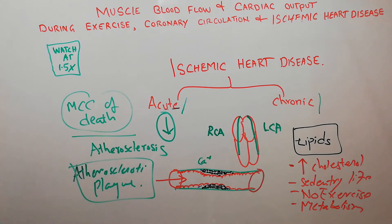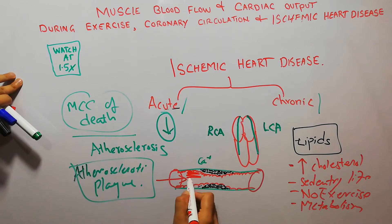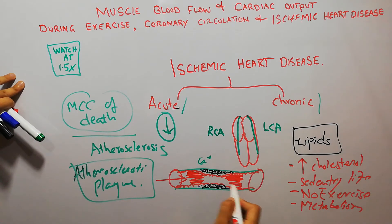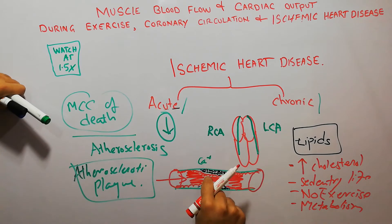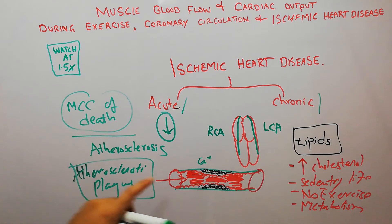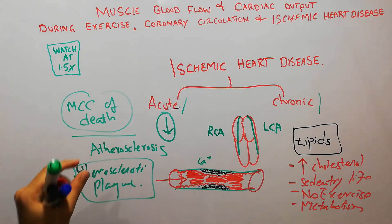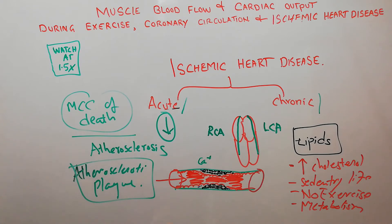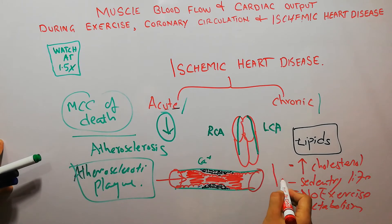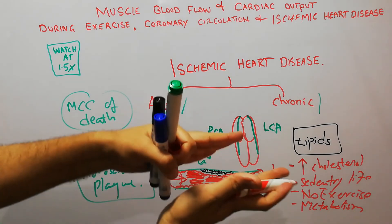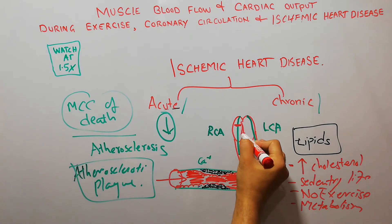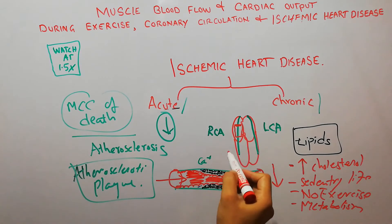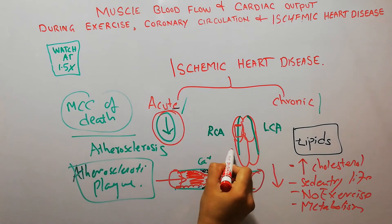As blood tries to move through the vessel, you can clearly see it is very difficult for blood to pass through the area where the atherosclerotic plaque has formed, because the plaque is protruding into the blood vessel, decreasing its width and caliber. When this occurs in the coronary vessel, it ultimately leads to decreased blood flow to the cardiac muscles.